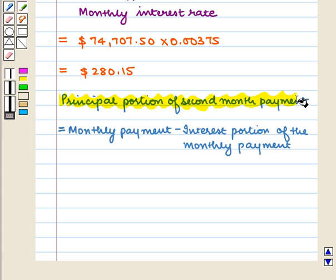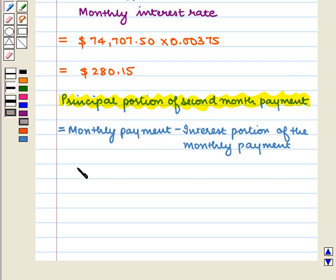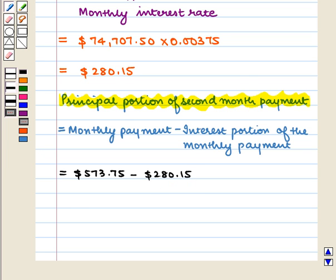The principal portion of the second month payment is equal to the monthly payment minus the interest portion of the monthly payment, which is equal to $573.75 minus $280.15, which is equal to $293.60.